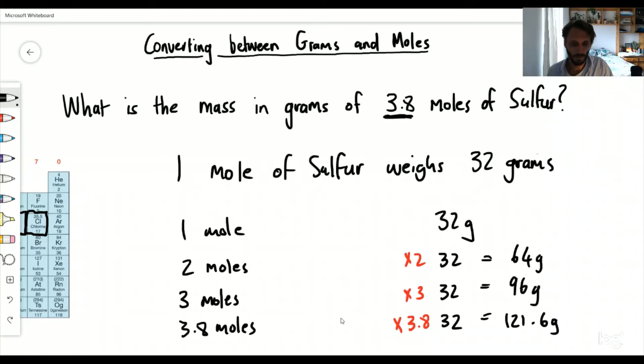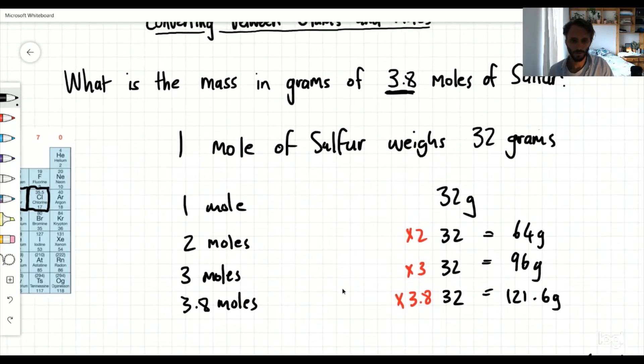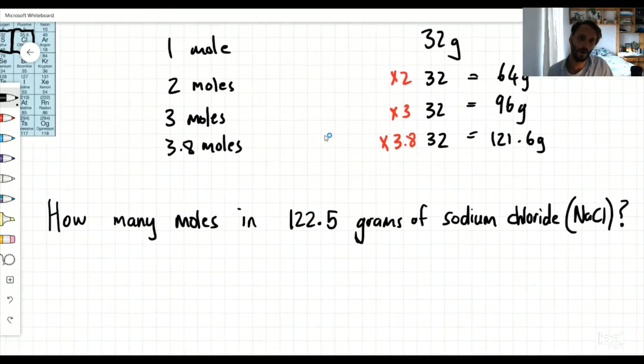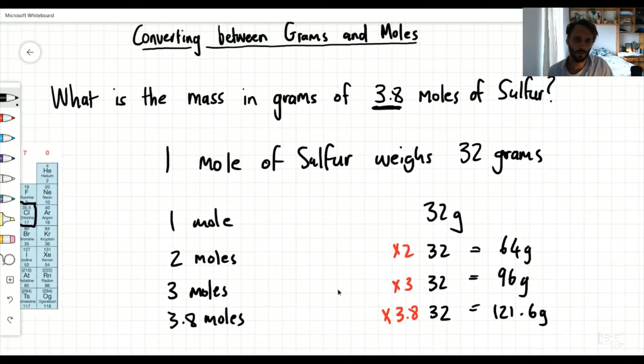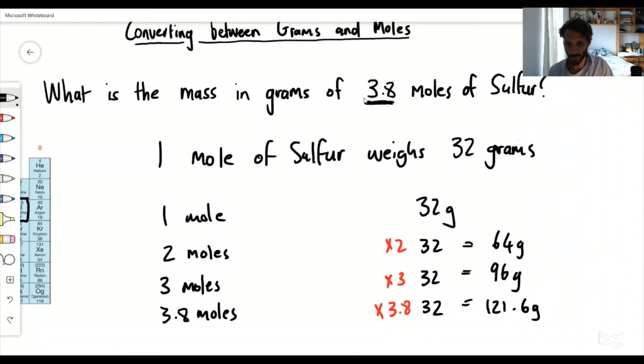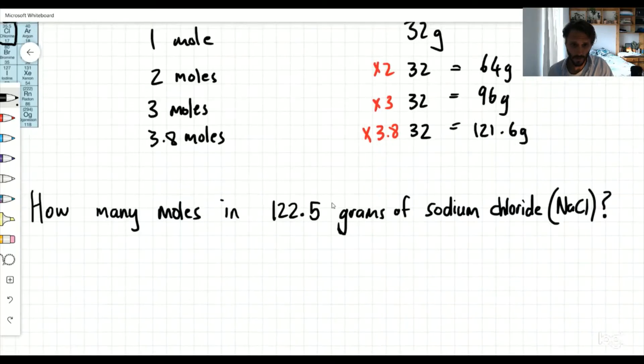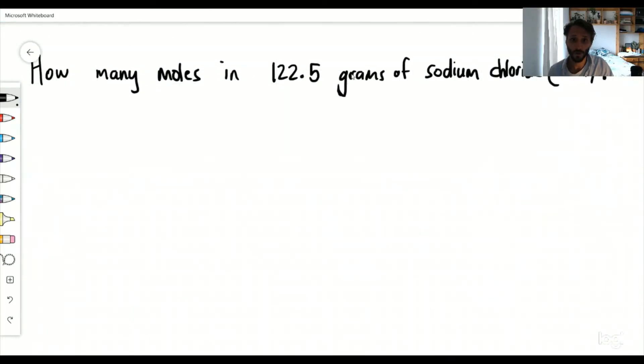So what happens if we had to ask this the other way around? Just like we've done here, what is the mass in grams of 3.8 moles? They've given you the amount of moles. What happens in a question when they give you the amount of grams and they ask you how many moles in 122.5 grams of sodium chloride?